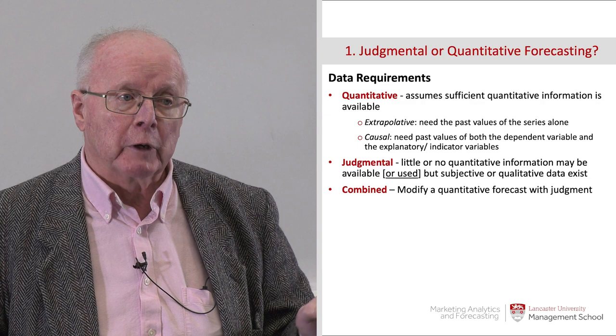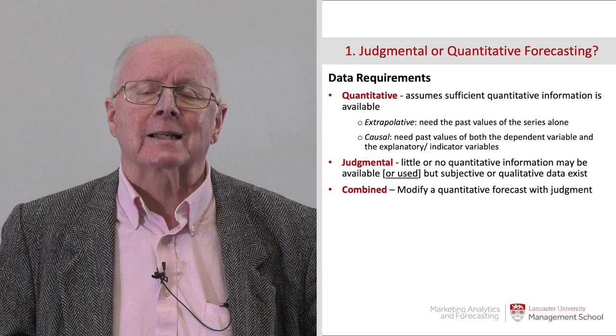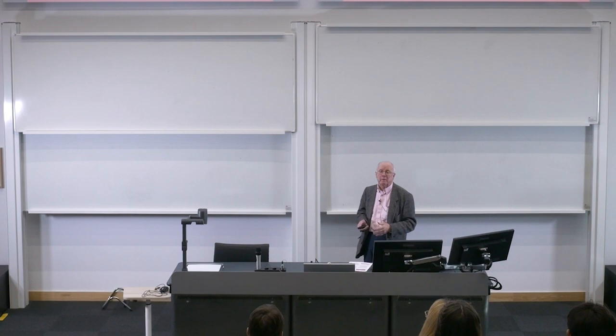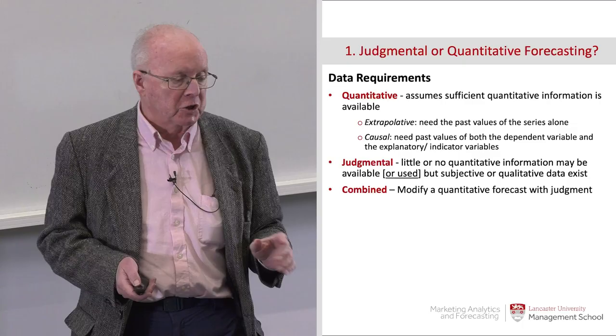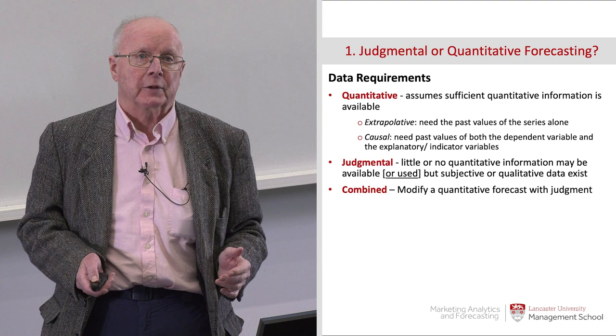A key issue in doing quantitative forecasting is sufficient quantitative information — or qualitative information that you can categorize one way or another. We have extrapolative methods, just using past history, and causal methods. Machine learning spans these two classes. Judgmental methods typically require little quantitative information. And of course we have the possibility of combining these methods.